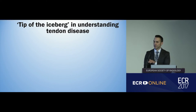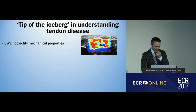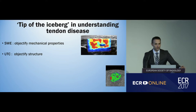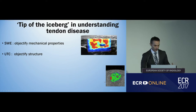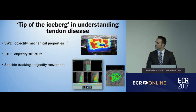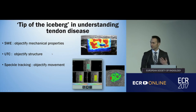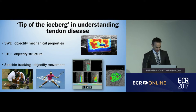But this is really only the tip of the iceberg in our understanding of tendon disease. Elastography objectifies mechanical properties. We also have other novel imaging modalities, such as UTC, which objectifies structure. Colleagues in Brussels are now doing speckle tracking, which objectifies movement. Perhaps with all of these imaging techniques, we might be able to make an average athlete into a very good athlete.